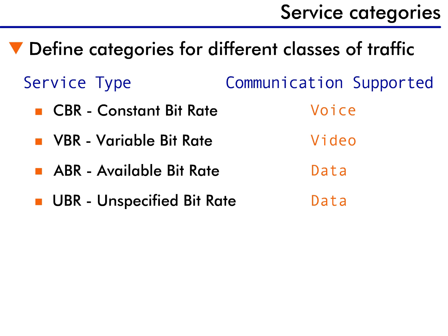Video communications commonly use this type of service. At the third level of priority is the available bitrate, or ABR category. Available bitrate is a little more complex than the rest and is defined to support plain data.